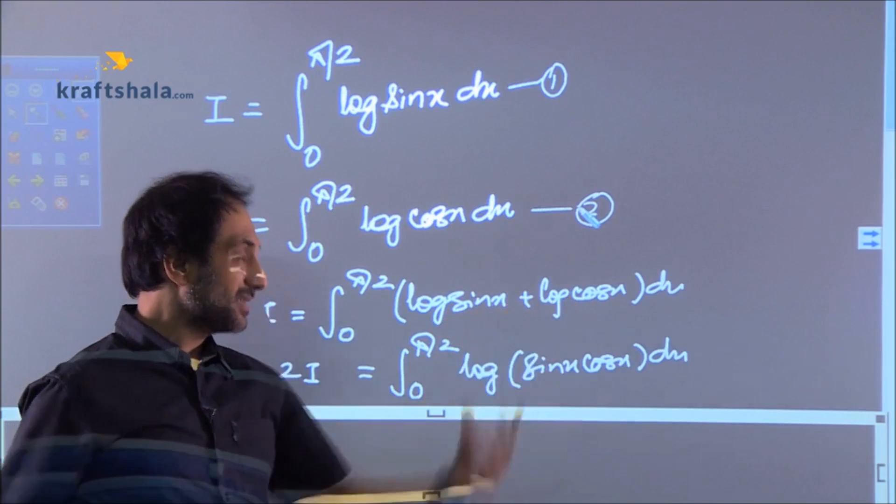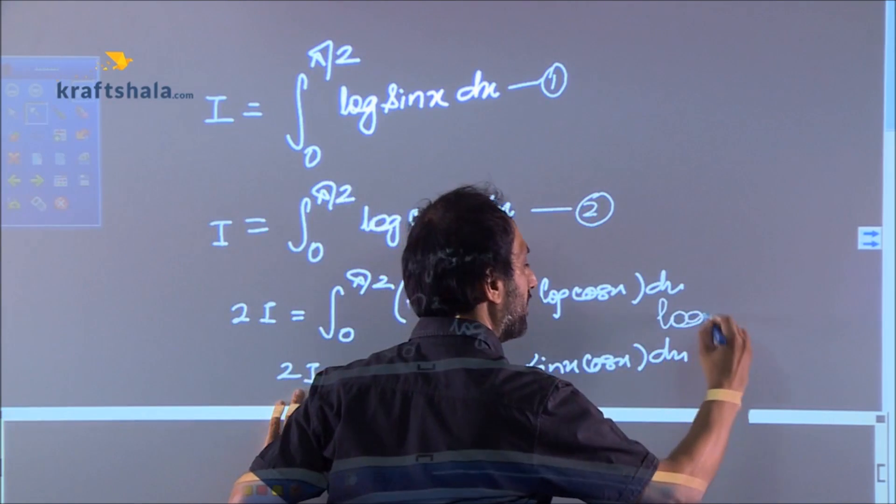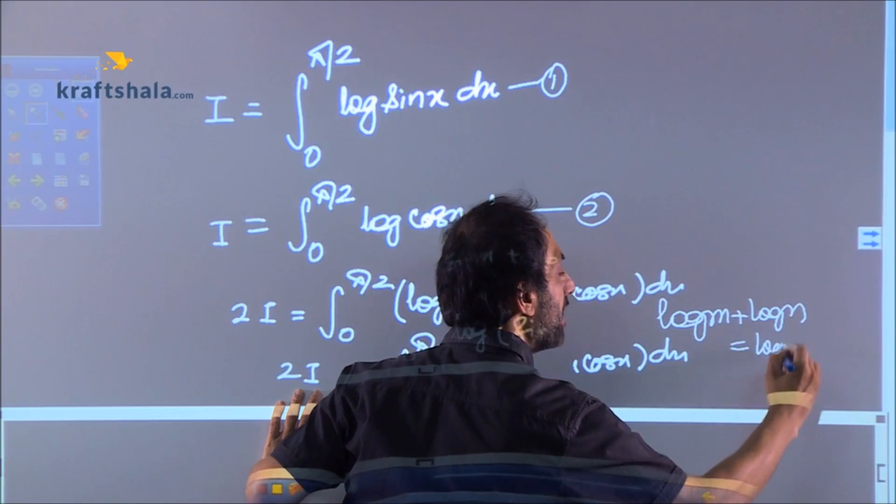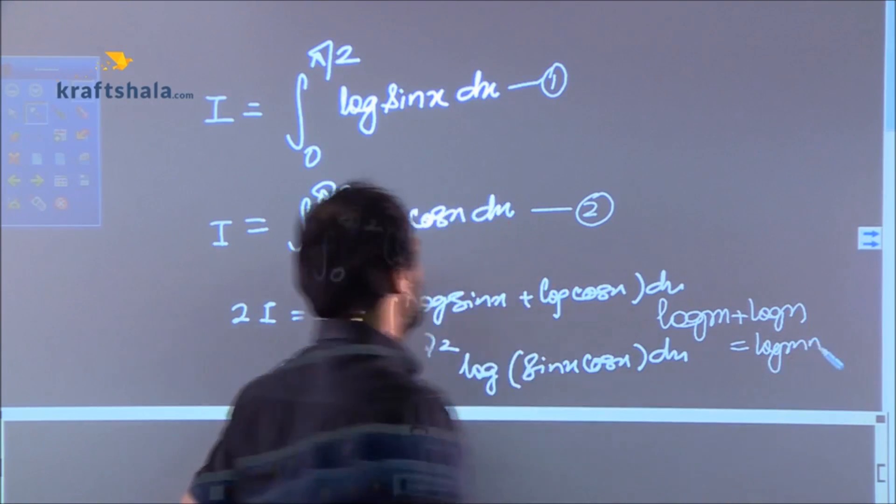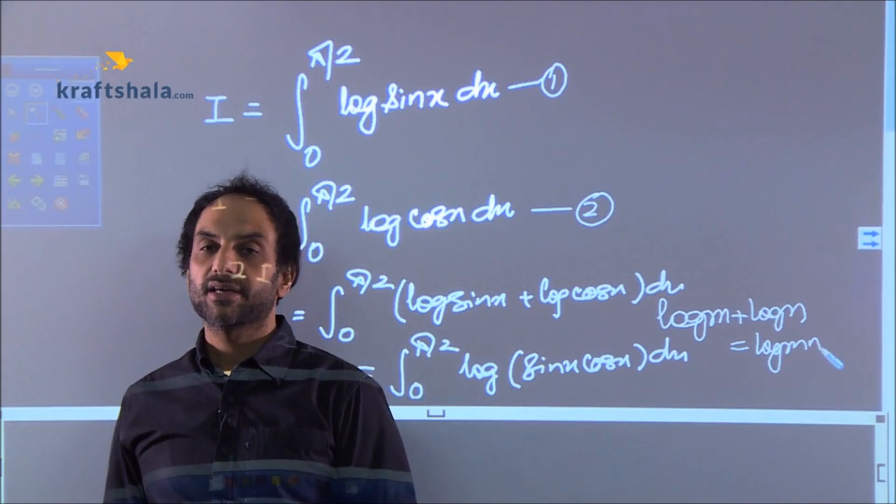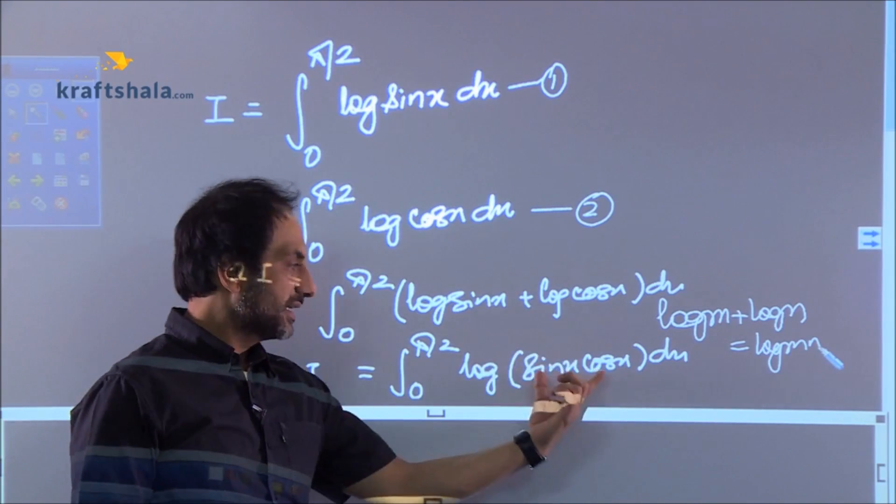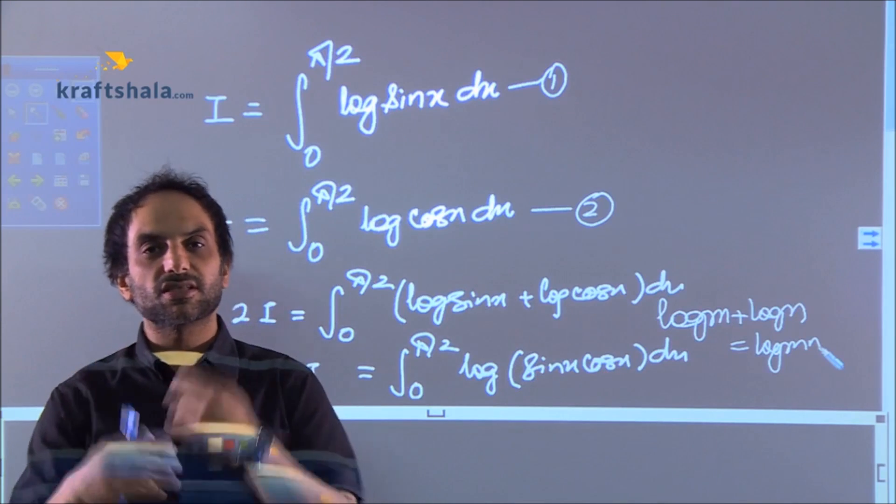What is log m plus log n? You got it right. Log m plus log n is log mn. So you reach to log sin x into cos x. Again, you are thinking right that sin x and cos x should be converted to sin 2x.